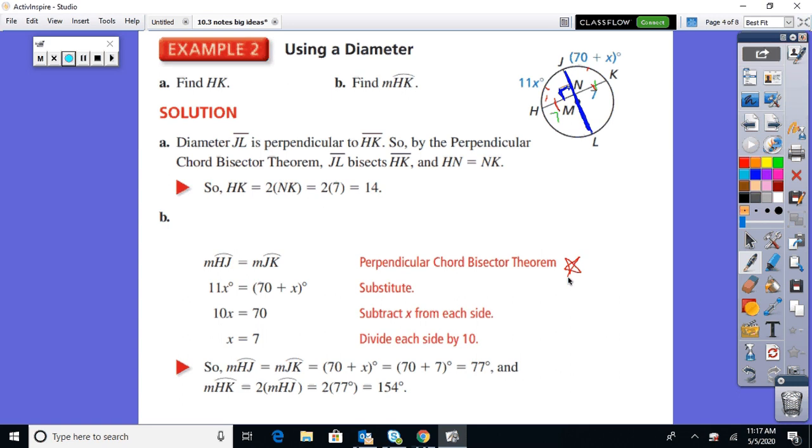So set them equal to each other. Solve it. X is 7. And they want to know the actual measure of HK. So plug it back in once you get 7. And of course, then each of these little arcs would be 77 degrees. Add them together, and you're looking at 154. So there are a couple illustrations of what's happening with those theorems.